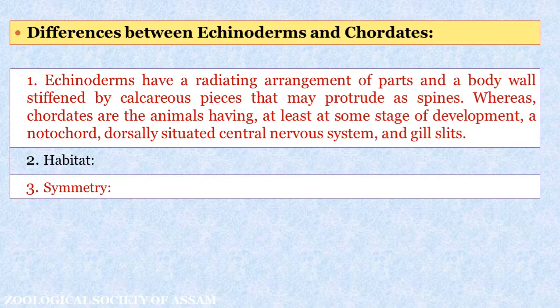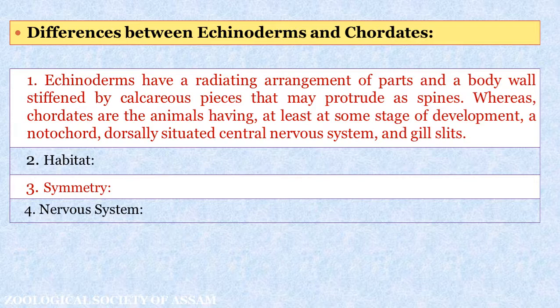An important difference between Echinoderms and Chordates is their body symmetry. In adult Echinoderms, they show radial symmetry, while Chordates show bilateral symmetry. Regarding the nervous system, Echinoderms have a nerve net without any central point, but Chordates have a central nervous system which is the major controlling part of the body.